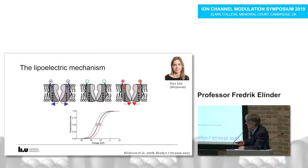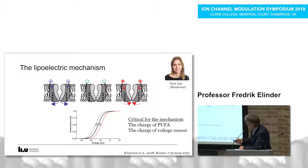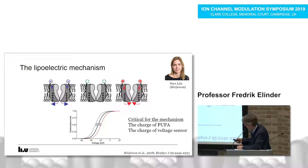The mechanism we proposed is the lipoelectric mechanism: the fatty acids insert close to the voltage sensor domain, and when negatively charged they attract the positively charged voltage sensor. Neutral compounds have no effect; positively charged compounds pull the voltage sensor down and close the ion channel. This is seen in shifts of the GV curve. Critical to this mechanism is that the charge of the polyunsaturated fatty acid matters, and also the charge of the voltage sensor — modifying the voltage sensor should modify the effect as well.